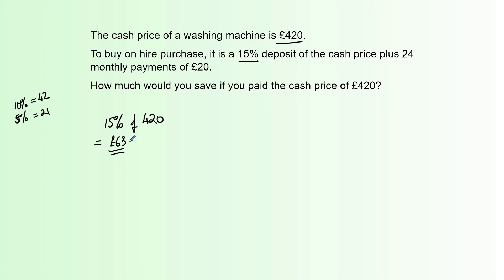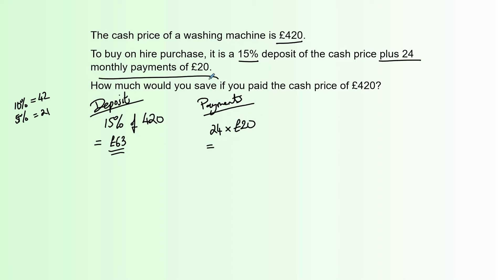That's how you'd calculate the deposit without a calculator — not too tricky, but be careful with the calculation. So the deposit is £63. Our payments are 24 payments times £20. 24 times 2 is 48, so that's £480. The total cost is the payments plus the deposit: £480 plus £63.